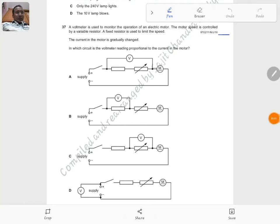This is the question from May 2016 Paper 1, question number 37. It says that a voltmeter is used to monitor the operation of an electric motor. The motor speed is controlled by a variable resistor, and a fixed resistor is used to limit the speed. The current in the motor is gradually increased.